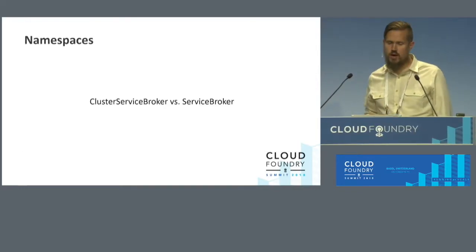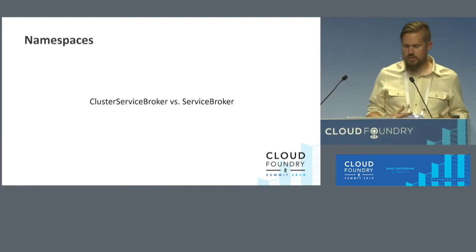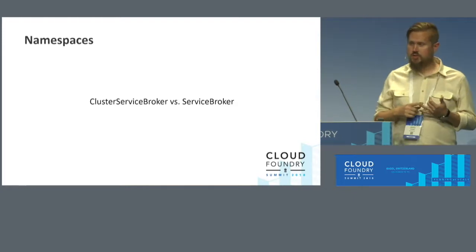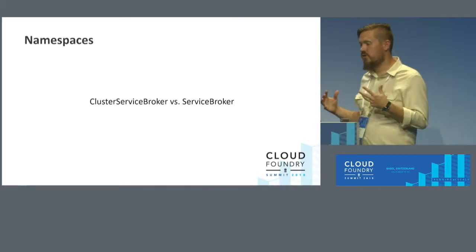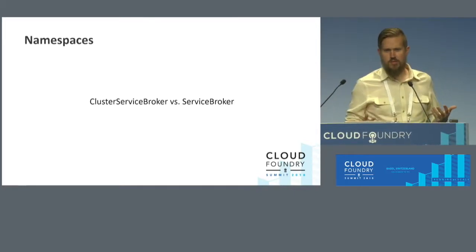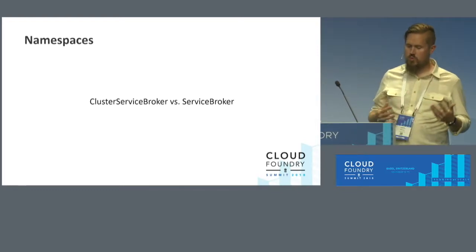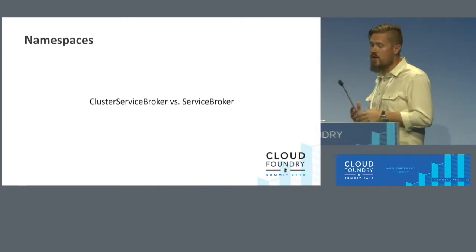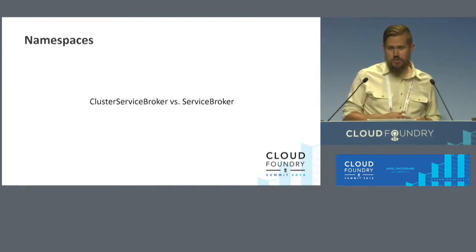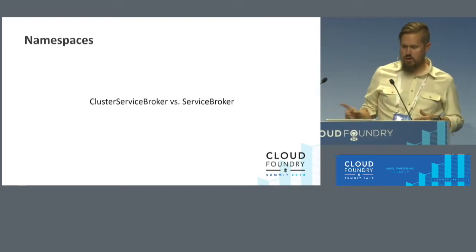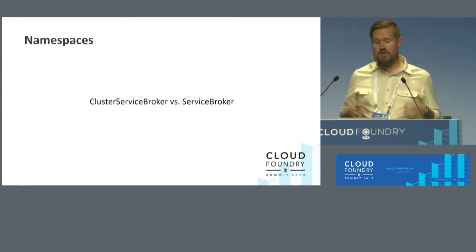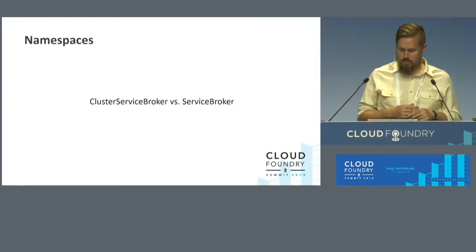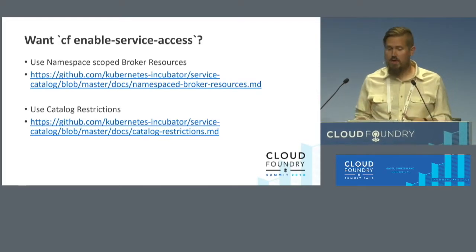Another concept that didn't map directly into how the catalog was implemented is how to deal with namespaces correctly. Some of the new resources are Cluster Service Broker, Cluster Service Class, and Cluster Service Plan — those were originally created at the cluster level, meaning everybody had access to them and there wasn't a way to apply role-based access control. In the CF world, you can CF enable-service to give certain orgs or spaces access to certain classes and plans. We did add a second set of namespace-scoped resources so you can get that same kind of experience.